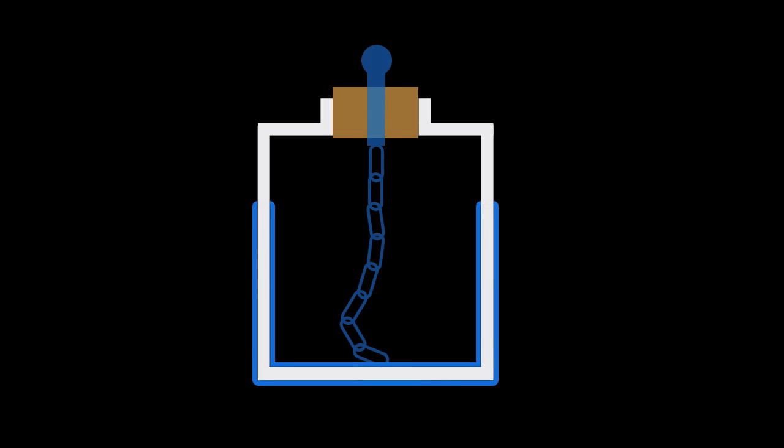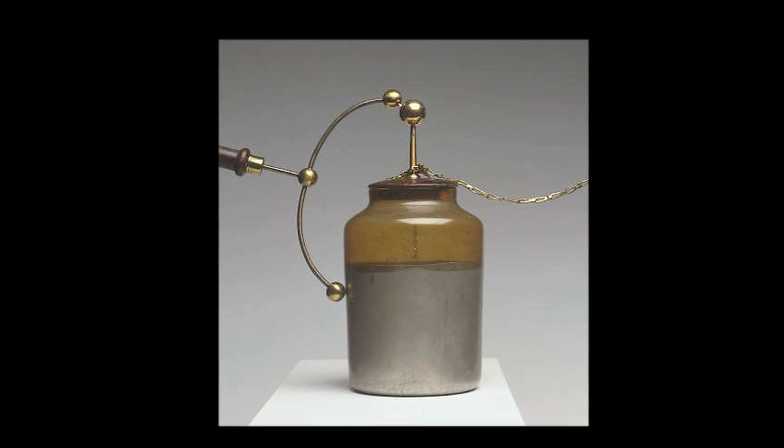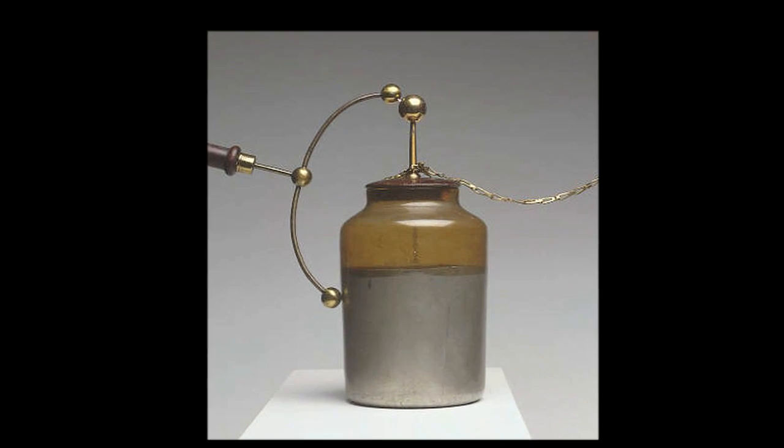It consists of a jar lined inside and out with metal, and through its cork had a chain that ran down to the inner lining. A charge could be applied to this chain and then later discharged by connecting the chain to the outer layer. Musschenbroek's device became known as a Leyden jar, which is a basic capacitor.